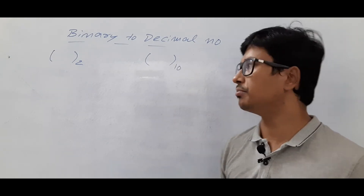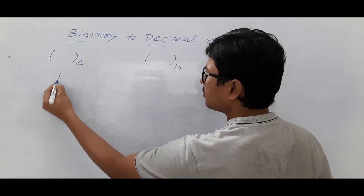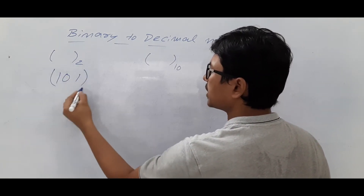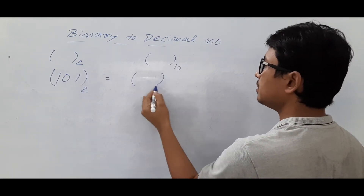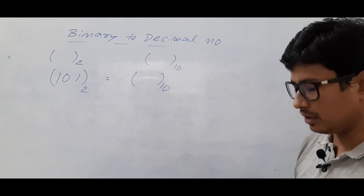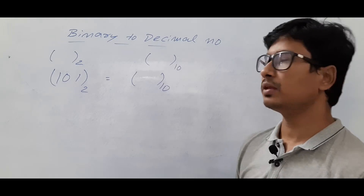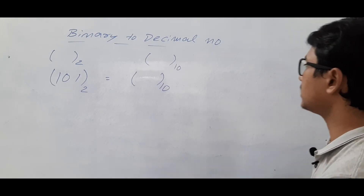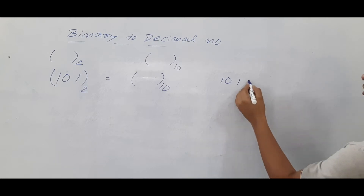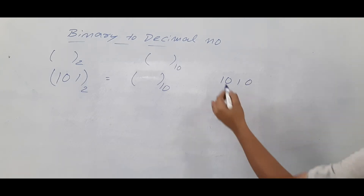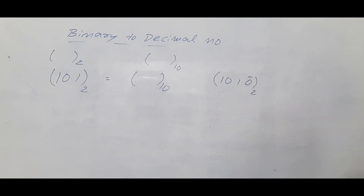Now, let's take the binary number 101 base 2. I want to convert this into base 10 — that is, find the equivalent decimal number for 101. Remember, whenever you have a binary number, each digit has a weight.